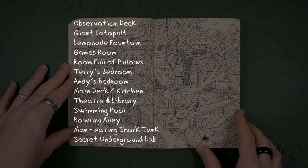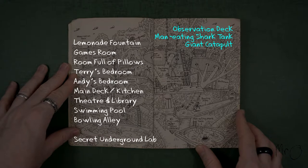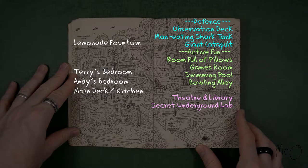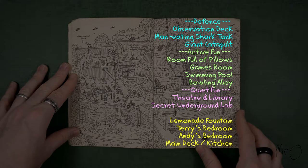And then I categorised them, so I put them into groups, depending on what they do or what they are for. For example, the observation deck, shark tank, and giant catapult are defence. The pillow room, games room, swimming pool, and bowling are active fun. The theatre and library and underground lab are quiet fun. And then the lemonade fountain, the two bedrooms, and the kitchen are essentials.